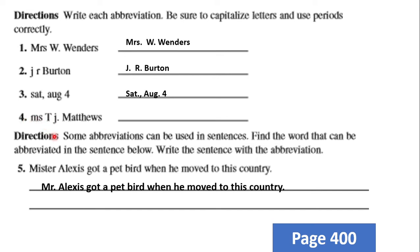Number four — do it on your own. Some abbreviations can be used in sentences. Find the word that can be abbreviated in the sentence below and write the sentence with the abbreviation. The sentence is: 'Mr. Alex got a pet bird when he moved to this country.' Can you find the word that can be abbreviated?